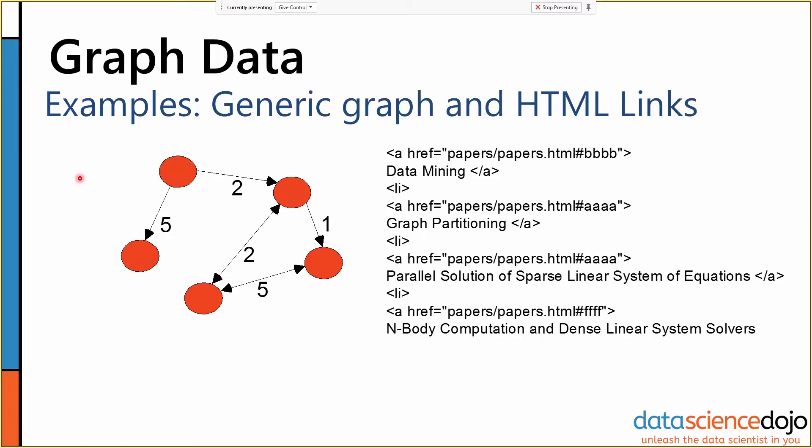You don't get the same kind of neat structure where n attributes can be represented by n columns. Each vertex can have any number anywhere from zero to an infinite, theoretically, number of edges coming out of it. So when you're doing that sort of analysis, you have to handle it differently.